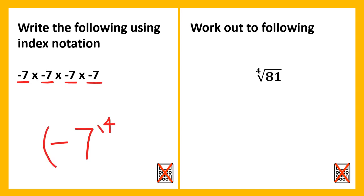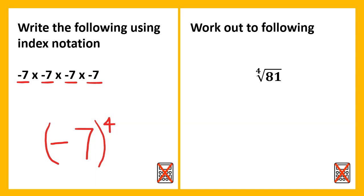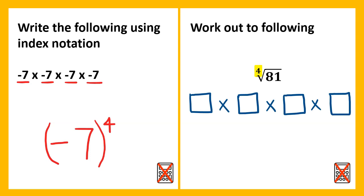Don't forget to use a bracket here to show that it's negative 7 that's being raised to the power of 4, rather than 7 to the power of 4 which has a negative in front of it. For the fourth root of 81, we're looking for the number that's been multiplied by itself four times. That would be 3: 3 times 3 is 9, times 3 is 27, times 3 is 81. So the fourth root of 81 is 3.